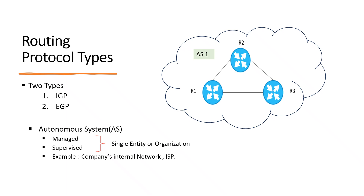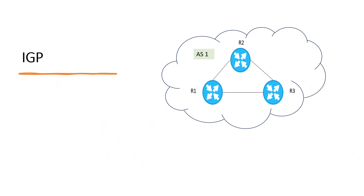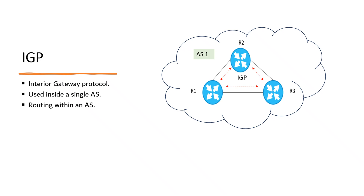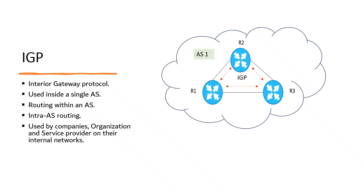IGP, also known as Interior Gateway Protocol, is a routing protocol designed and intended for use inside a single autonomous system — it is used for intra-AS routing. Companies, organizations, and even service providers use interior gateway protocols on their internal networks. IGP includes RIP, EIGRP, OSPF, and IS-IS.